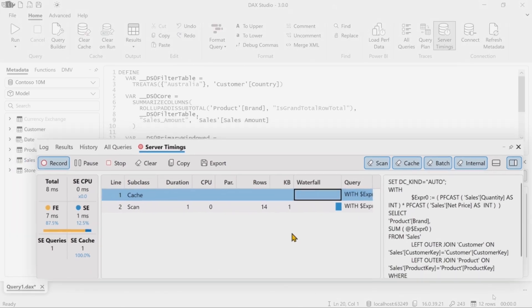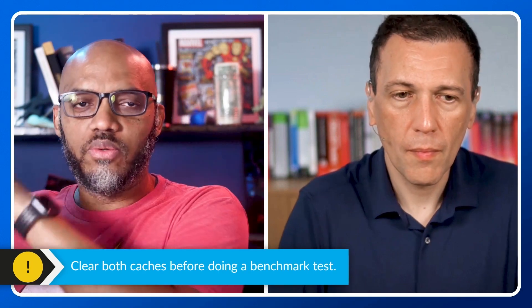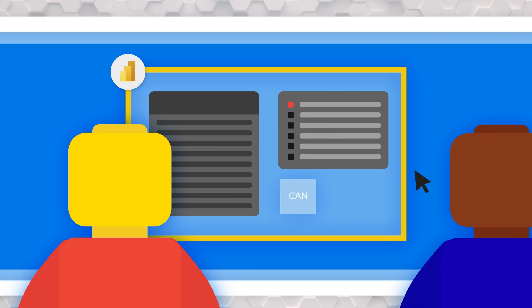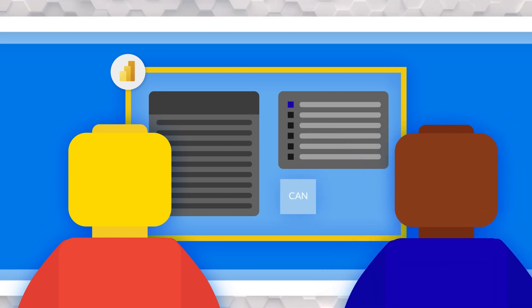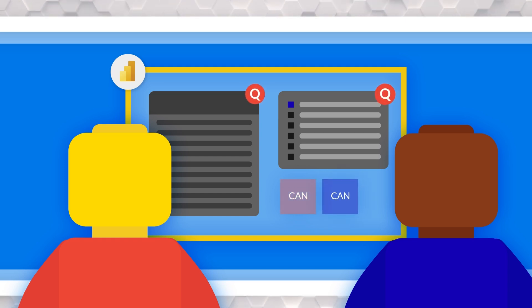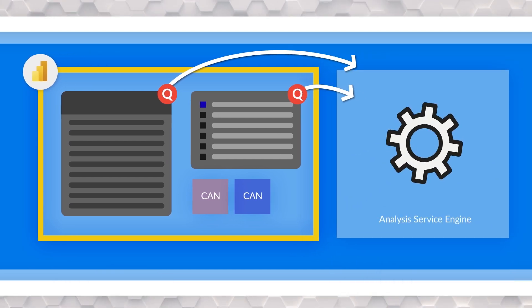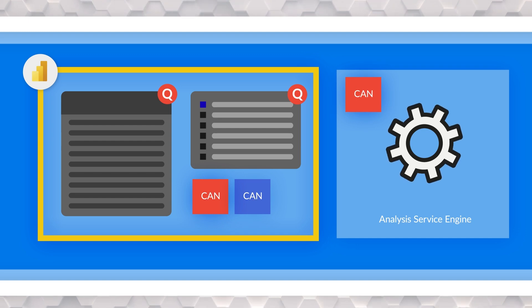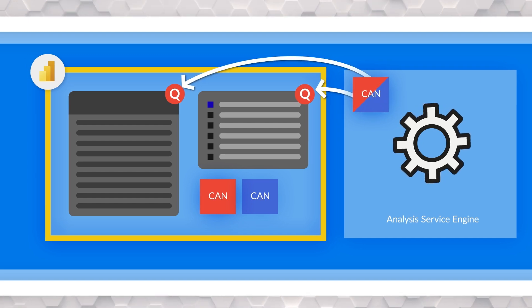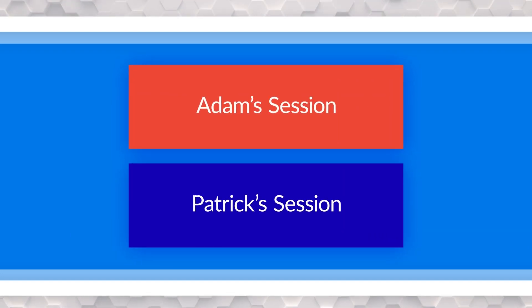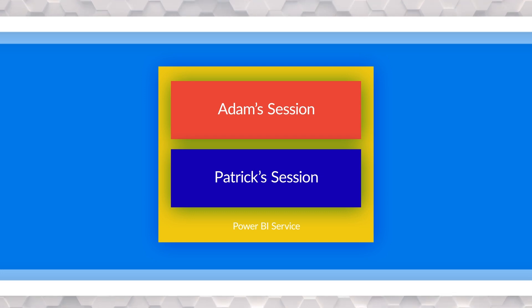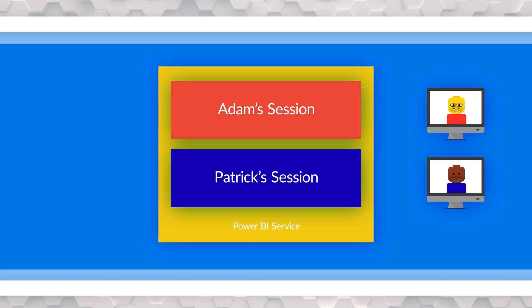There are two caches: a report cache and a data cache. When doing baselining and benchmarking, you need to be in the worst possible condition — clear both the report cache and the data cache to get a good baseline of how things will perform. But if I publish the Power BI report to the service and Adam hits the report and chooses Canada, then I hit the report and choose Canada — my guess is there will be a report cache for each of us. But when those queries go back to Analysis Services, if Adam hit it first, Adam already cached that data — so I'm going to hit the Analysis Services data cache. So this is Adam and this is Patrick, representing two sessions on the cloud Power BI service.